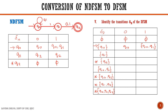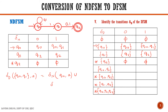Next are the transitions on Q1. On Q1 receiving a 0 there is a transition to Q2, and on Q1 receiving a 1 there is also a transition to Q2. For state Q2, there are no transitions defined, so we write phi. For the combined state {Q0, Q1}, delta D of {Q0, Q1} on input A equals delta N of Q0 on A union delta N of Q1 on A. This gives {Q0, Q2} on input 0, and {Q0, Q1, Q2} on input 1.